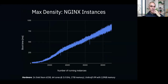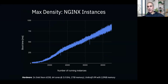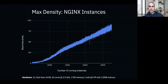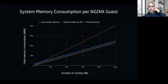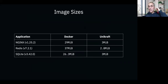We also ran a stress test to see how many unikernels we could pack onto a one-terabyte memory server. It got close to about 100,000 — clearly you'd never do this in production, but it shows how far you can push this. Image sizes are roughly an order of magnitude smaller with Unikraft than with a Docker container.